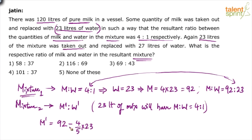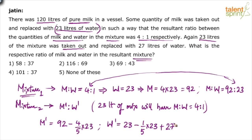This is the final quantity of milk, M'. Similarly, to find water W': initial water in Mixture 1 is 23 liters. From this, how much water is removed? 1 out of 5 parts — so 1/5 × 23. And 27 liters of water was added back. This is very important — we are removing the mixture, so both milk and water come out, but it was replaced with 27 liters of water. So W' = 23 − (1/5 × 23) + 27. Calculation is your lookout.